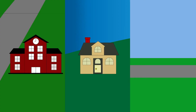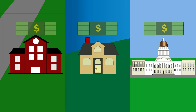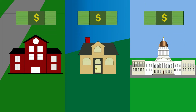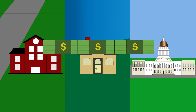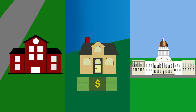The mill rate is calculated for each community by comparing the cost of education, the property value, and how much money the state is granted to contribute. Once these three factors are compared, a mill rate is determined.